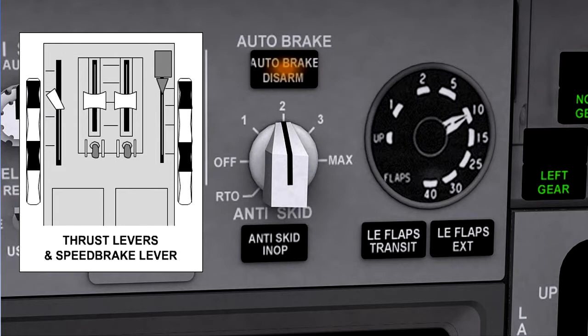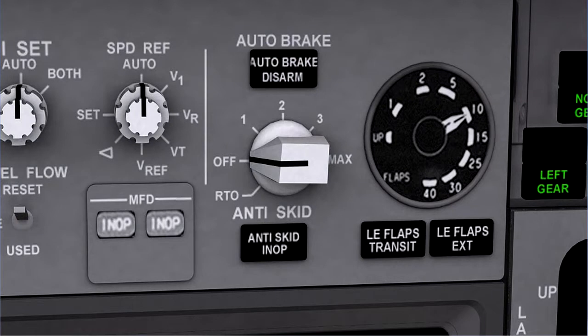This is because advancing the thrust levers or retracting the speed brakes is an indication of a rejected landing. The autobrakes can also be disarmed by moving the autobrake selector to disarm or to off. In this case, the disarm light will not illuminate.